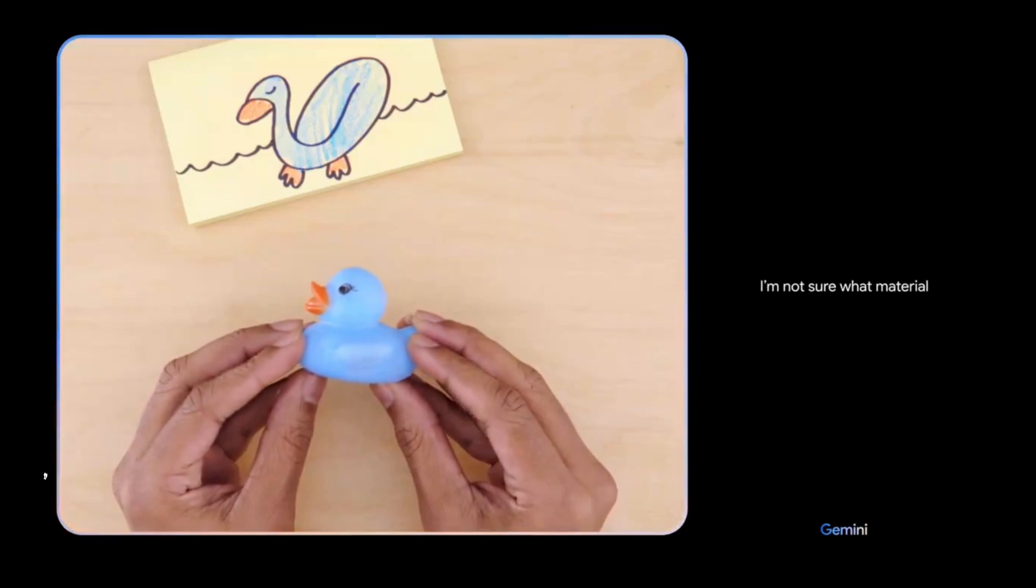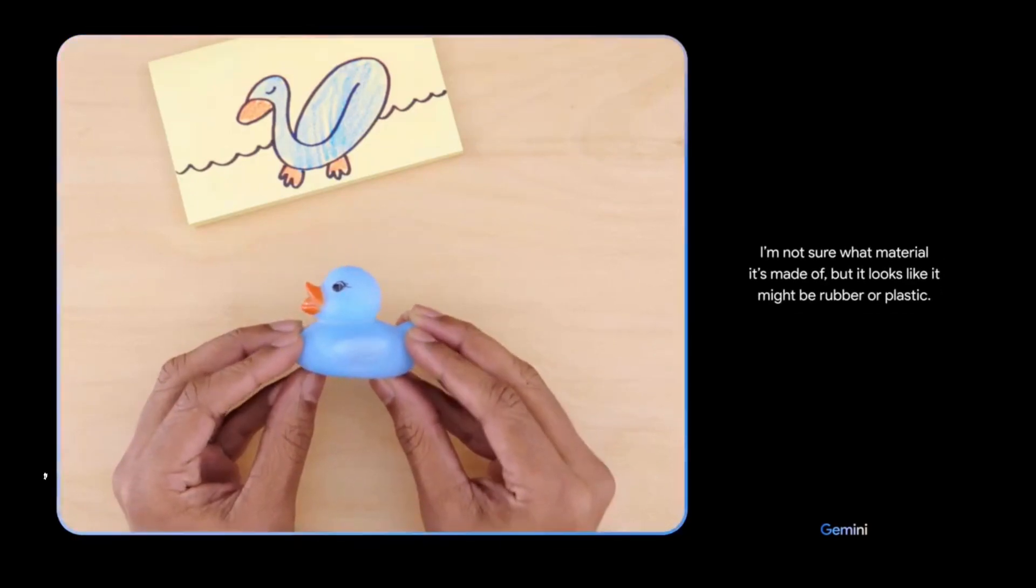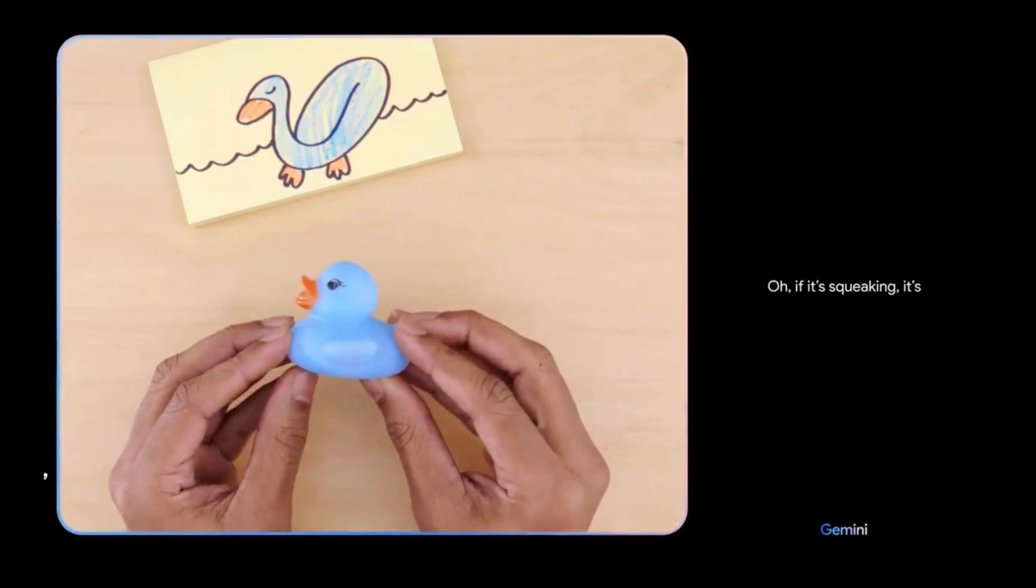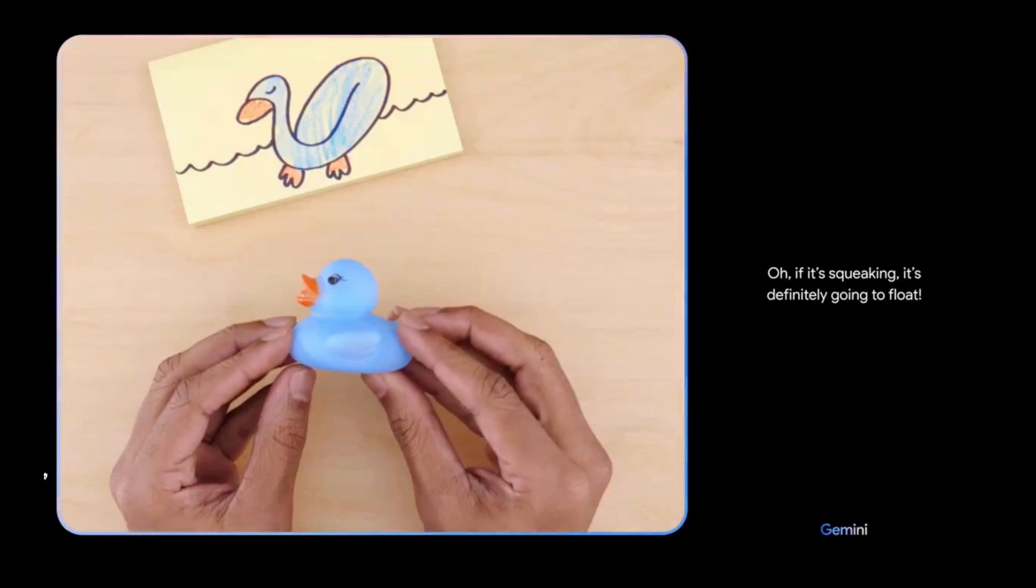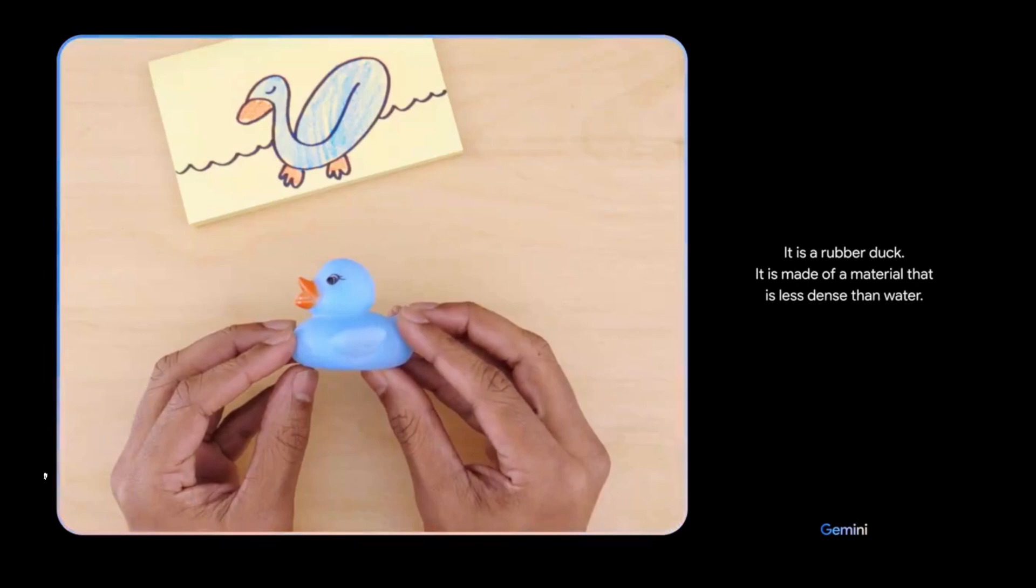Would this float? I'm not sure what material it's made of, but it looks like it might be rubber or plastic. What if I tell you it's making a squeaking sound? Oh, if it's squeaking, it's definitely going to float. Nice. It is a rubber duck. It is made of a material that is less dense than water.